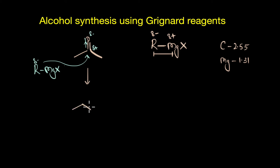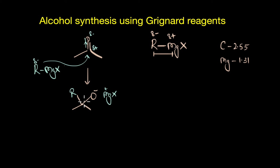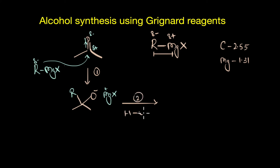As a result of this addition we get an intermediate alkoxide ion. The intermediate looks like O⁻ with MgX as the counter ion. Once this addition is complete, in the second step we perform a hydrolysis — we add water or mild acid in order to protonate this alkoxide ion, so the oxygen atom abstracts a proton from the water molecule.